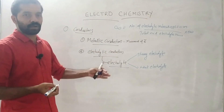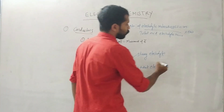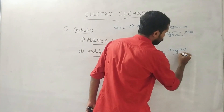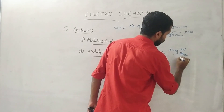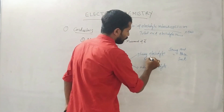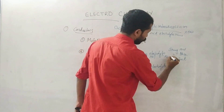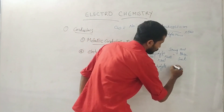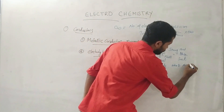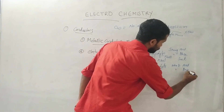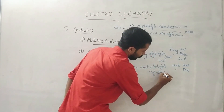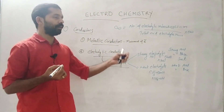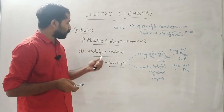Electrolytes are classified as strong and weak. Examples of strong electrolytes include strong acids, strong bases, and salts — for example, HCl (strong acid), NaOH (strong base), NaCl and KCl (salts). Examples of weak electrolytes include weak acids and weak bases — for example, ammonium hydroxide is a weak base.